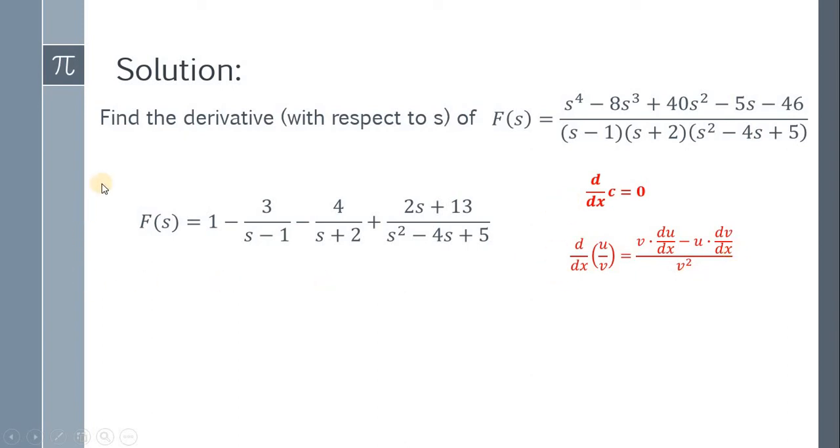Applying this rule to our equation, differentiate both sides. We will have F'(s) = 3/(s - 1)^2 + 4/(s + 2)^2 - (2s^2 + 26s - 62)/(s^2 - 4s + 5)^2. And we're done.